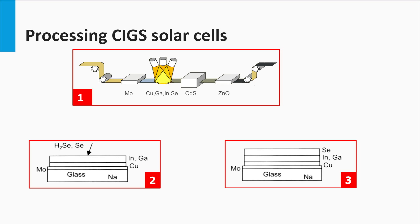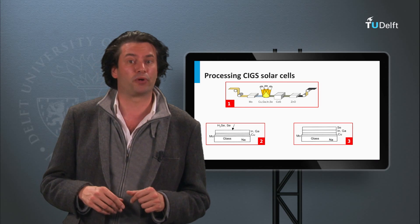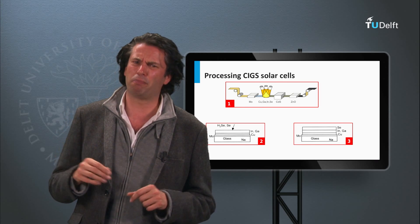Companies that use or have used the co-evaporation process are Wurth Solar, Global Solar and Ascent Solar. Among CIGS companies using sputter approaches are Showa Shell, Solar Frontier, Avancis, MiaSolé, and Honda Soltec.